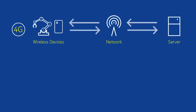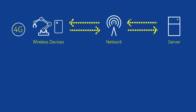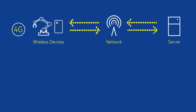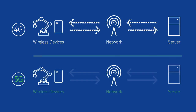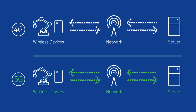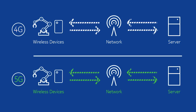With 4G today there's higher latency in the network — this is the amount of time it takes to transmit data from the device to the network and back again. With 5G, that communication path will allow you to communicate much quicker and you'll be able to control machines.